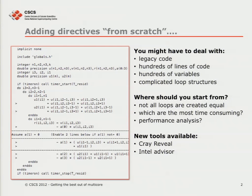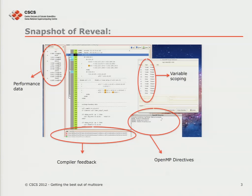There's also Intel Advisor that we're going to start working with as well, but we're not going to talk about that today. If you don't have access to a Cray machine, it is still possible. This is what Reveal looks like — it's a nice GUI. It might look a bit messy right now, but here is your source code, the same source code as you saw on the previous slide. Over here, the program has identified for you the most intensive and time-consuming loops, so you can immediately zoom in on the loops that need the most work.